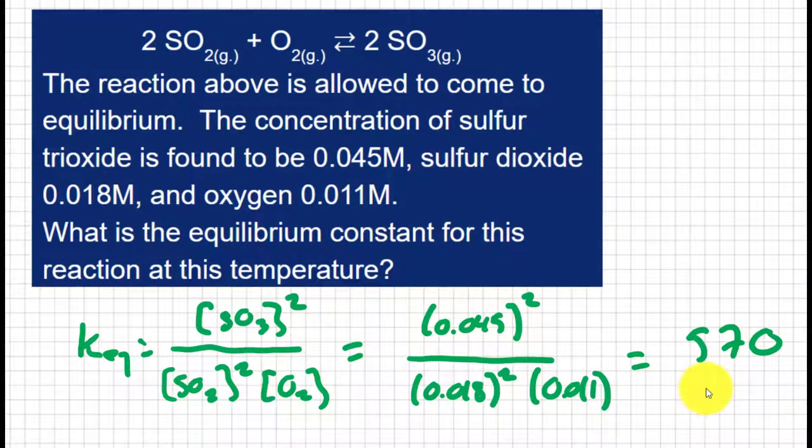So the fact that our K value is larger than 1, actually several orders of magnitude larger than 1, means we have more product than reactant. In other words, the reaction going to the right, the forward reaction, is doing a better job than the reaction going to the left.